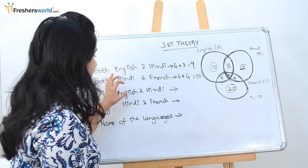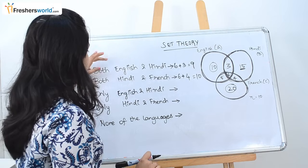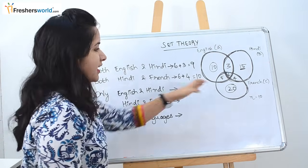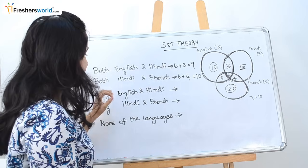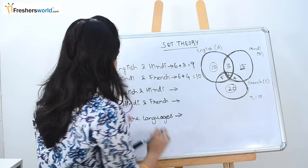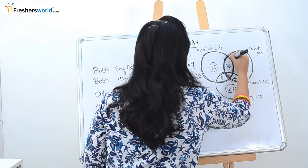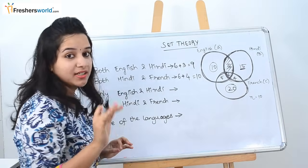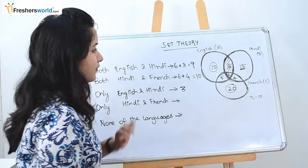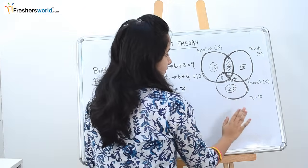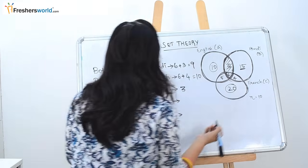Next they are asking for only English and Hindi — find the difference between this and the previous question. They are asking for people who know English and Hindi, but they specifically say we don't want people who know French. So it is just the intersection of English and Hindi only, which is 3. Similarly, the next question is only Hindi and French. Those two circles represent Hindi and French, and the people who know only Hindi and French is 4.